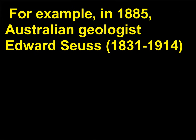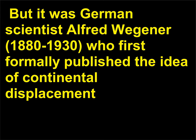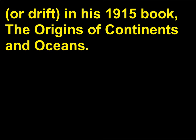For example, in 1885, Australian geologist Edward Suess (1831–1914) proposed that the southern continents had once been a huge land mass that he called Gondwana Land. But it was German scientist Alfred Wegener (1880–1930) who first formally published the idea of continental displacement, or drift, in his 1915 book The Origins of Continents and Oceans.